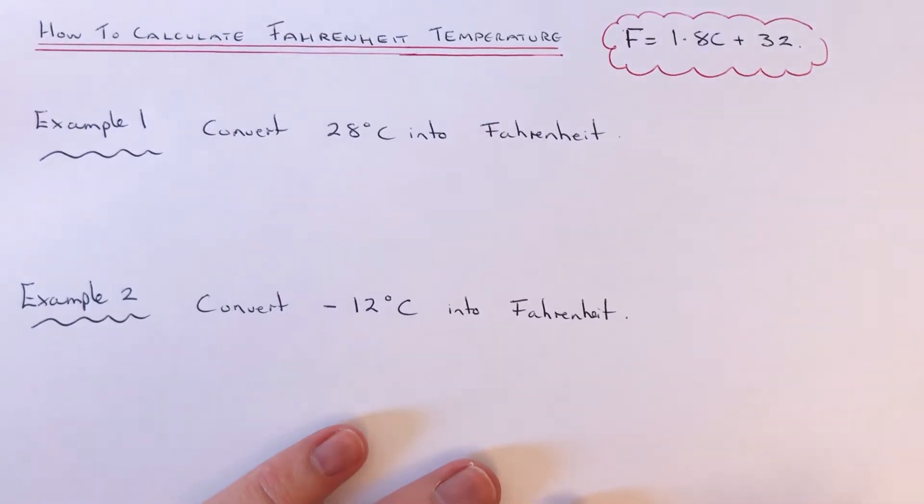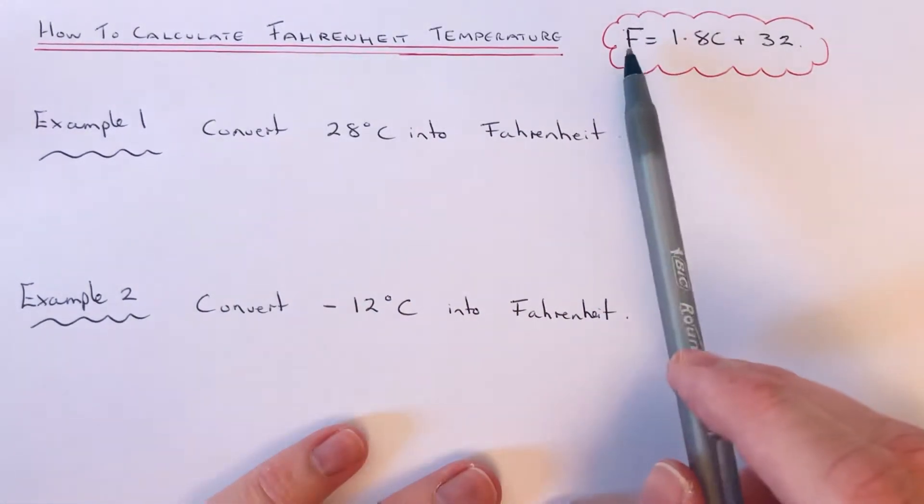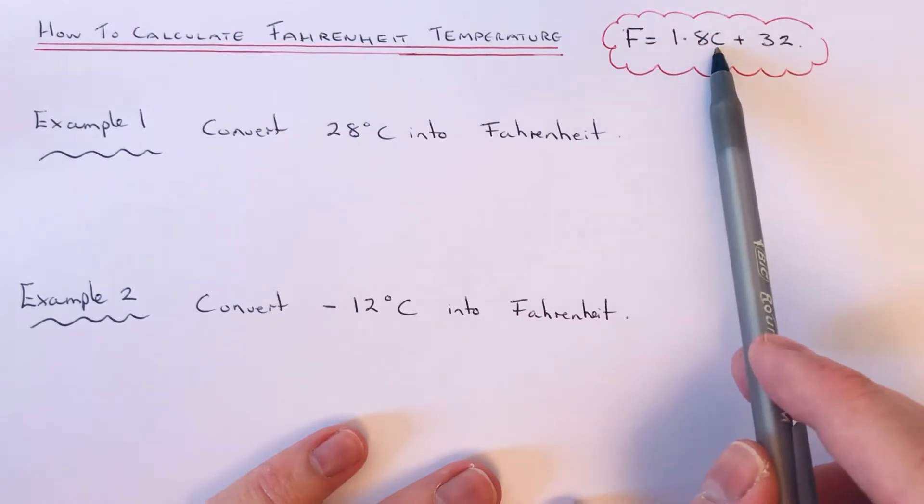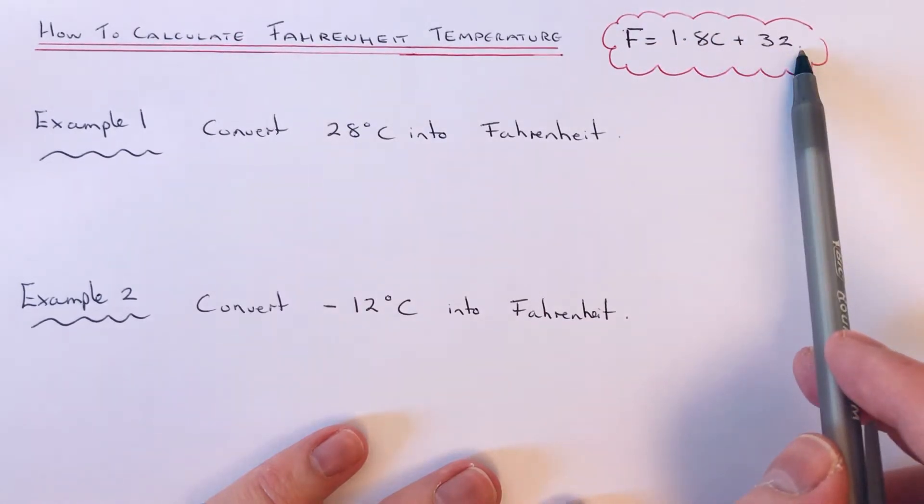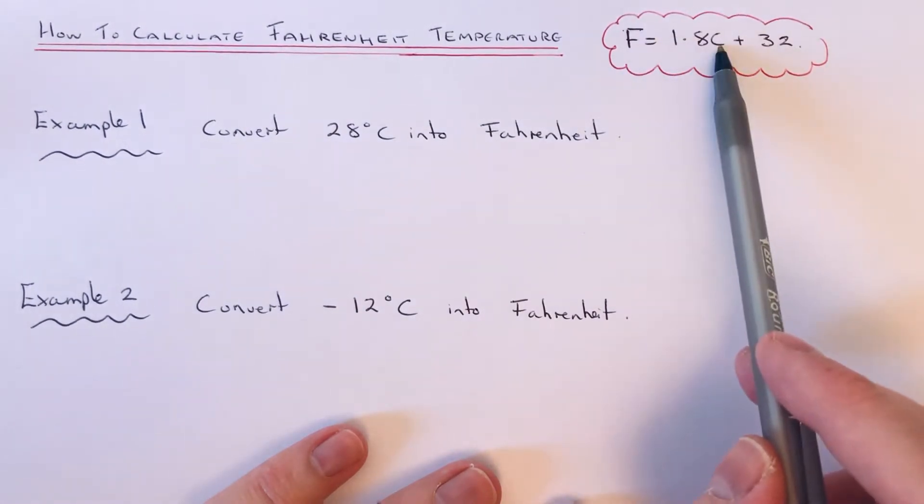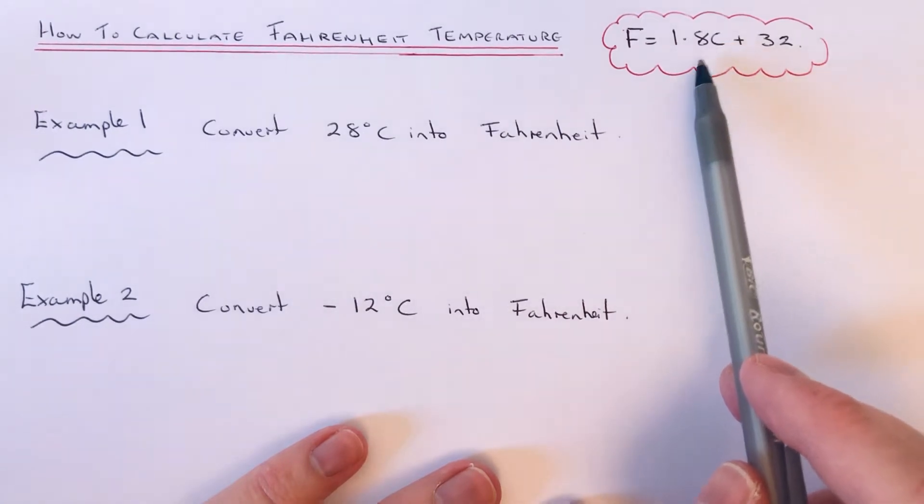Hi guys, welcome back. This is Maths 3000. Today I'm going to show you how to work out the Fahrenheit temperature if you're given the temperature in Celsius. To do this, you need to use the formula F equals 1.8C plus 32, where F is the temperature in Fahrenheit and C is the temperature in Celsius.